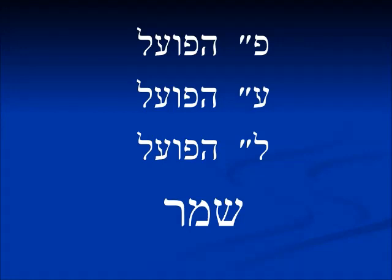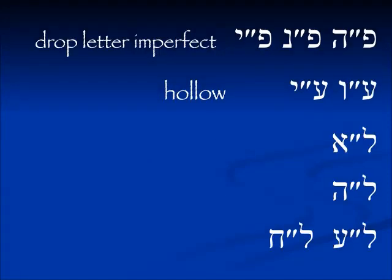Remember, when we talk about Pe' HaPo'al, we're talking about the first letter of the root. Ayin HaPo'al is the middle letter of the root, and Lamed HaPo'al is the third letter of the root. So we have the example Shamar: Pe' HaPo'al is Shin, Ayin HaPo'al is Mem, Lamed HaPo'al is Resh. We've covered all the present tense and the different Binyanim for these irregular verbs.